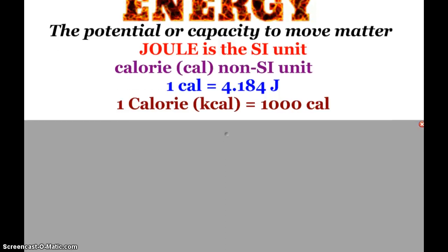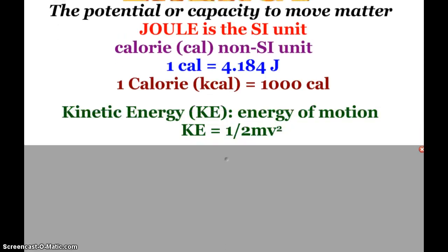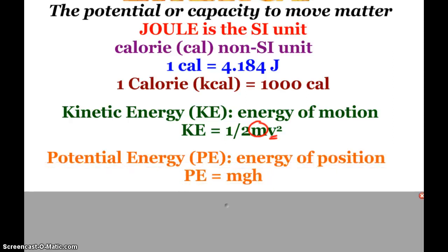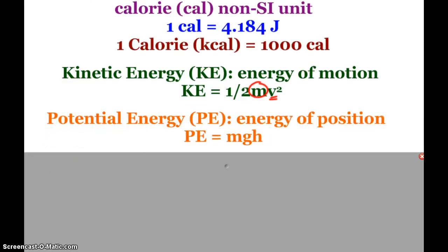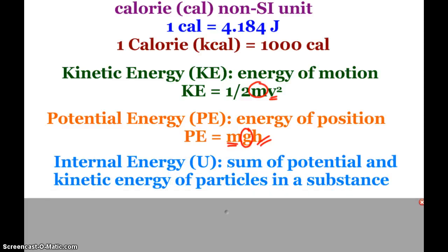Now we have some different types of energy. Kinetic energy is the energy of motion with a formula of KE = 1/2 mv², where m is mass and v is velocity. Velocity has a much greater effect on kinetic energy than mass does. Potential energy is the energy of position: PE = mgh, where m is mass, g is gravity (9.8 m/s²), and h is height. Then we have internal energy, the sum of potential and kinetic energy of particles in a substance.